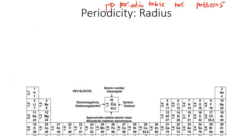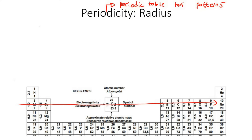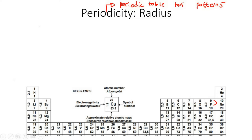What scientists have observed is that if you go across this period — remember, a period is when you go horizontally — and if you look at the patterns you would see with the atoms, we're going to look at different types of patterns. For example, we're going to look at the pattern of radius. What they found is that same pattern will happen to the row below and the row below, and each row will have the same pattern.